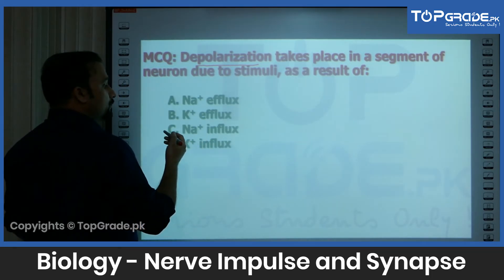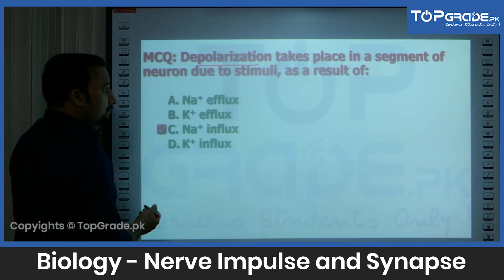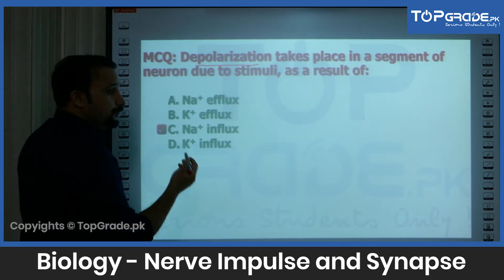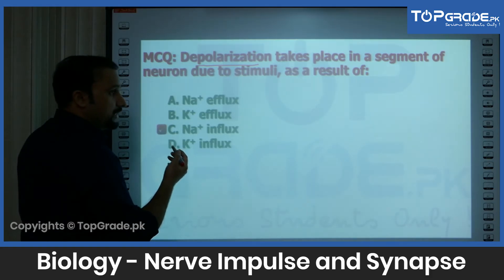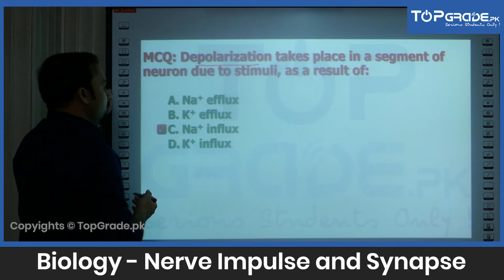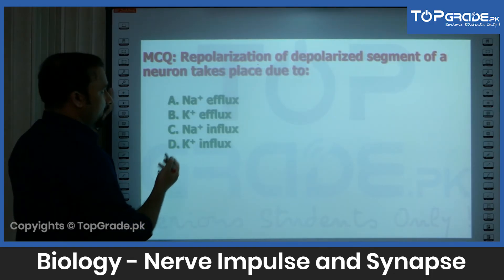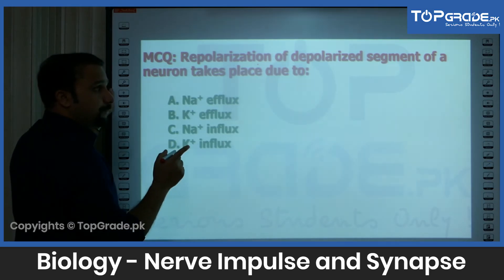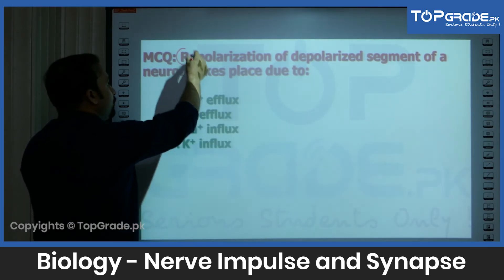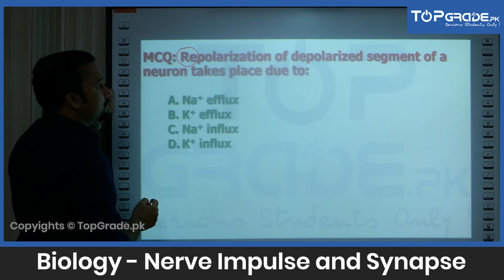The best response to this question is sodium influx. The reason for depolarization occurring across any neuronal segment is the sodium influx. We will discuss this in detail. Another statement — before that, what is repolarization? Repolarization of a depolarized segment of a neuron takes place due to...